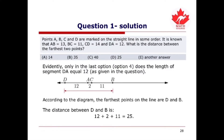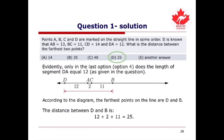In the last possibility, the length of segment DA equals 12. According to the diagram, the furthest points on the line are D and B. The distance between D and B equals 12 plus 2 plus 11, which is 25. This corresponds to answer choice D.